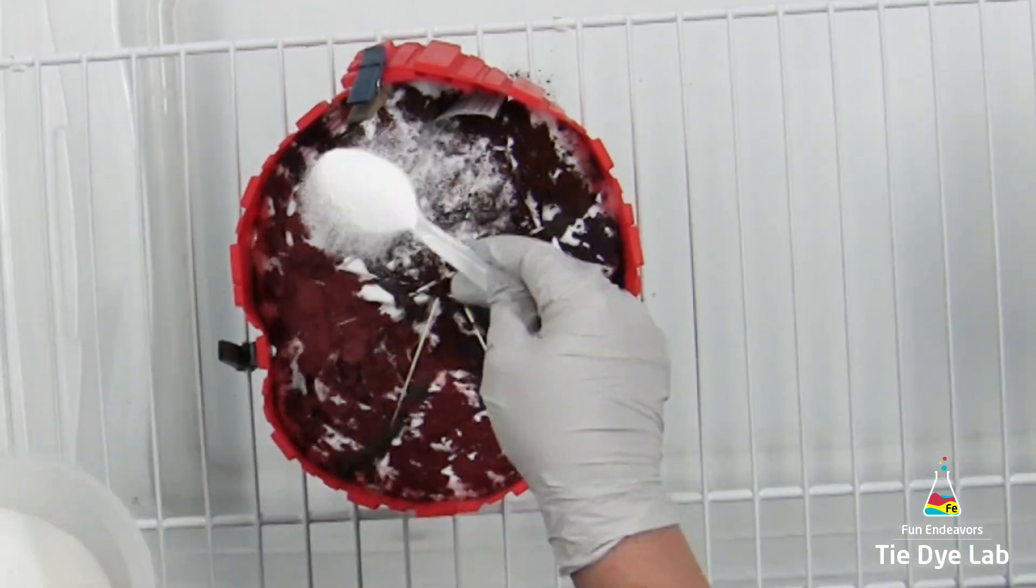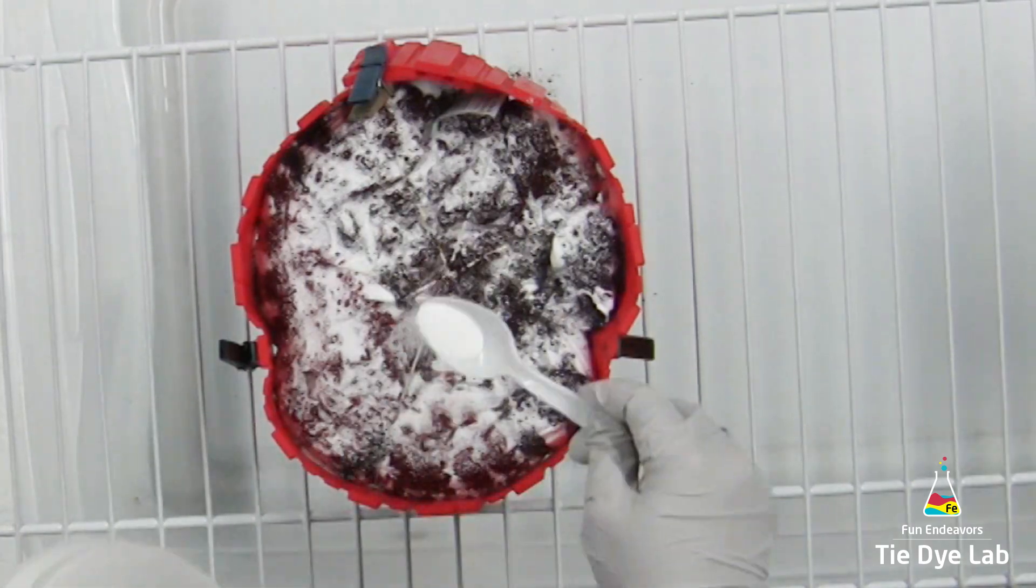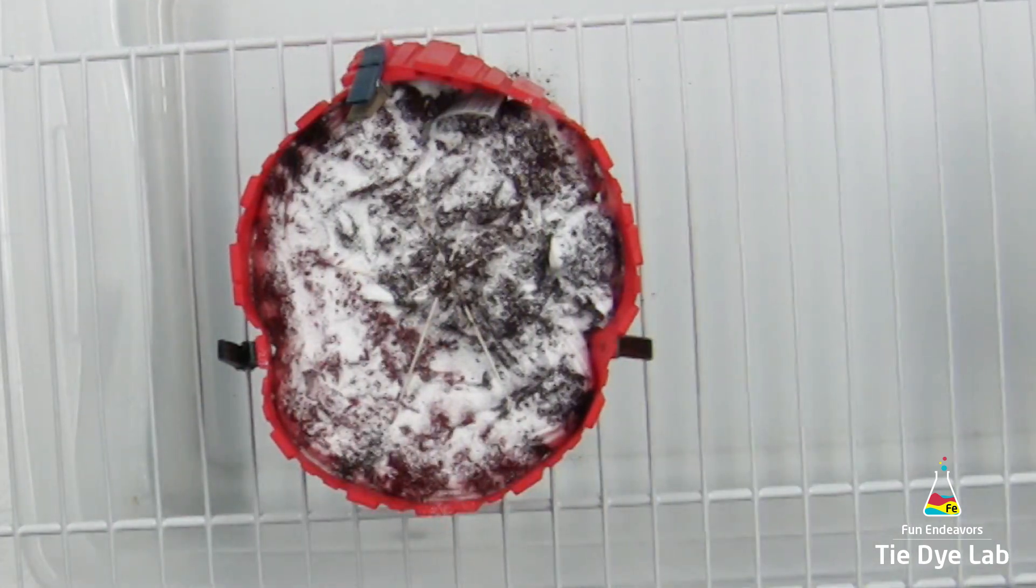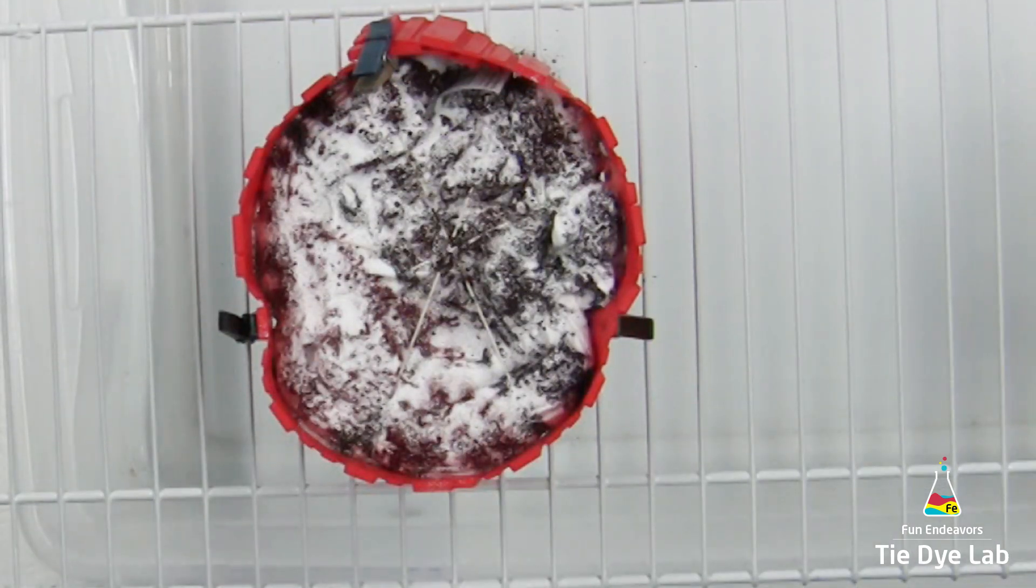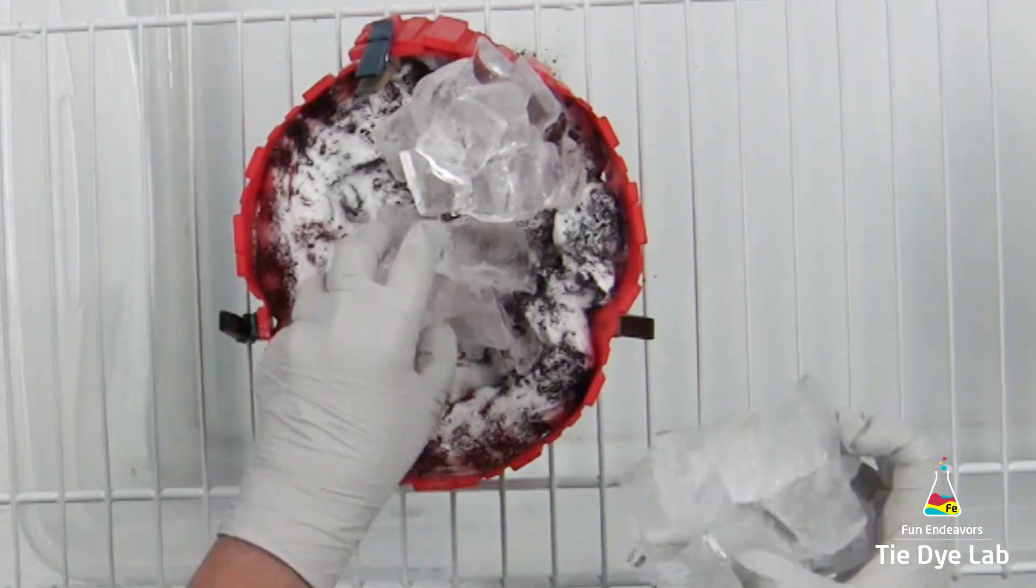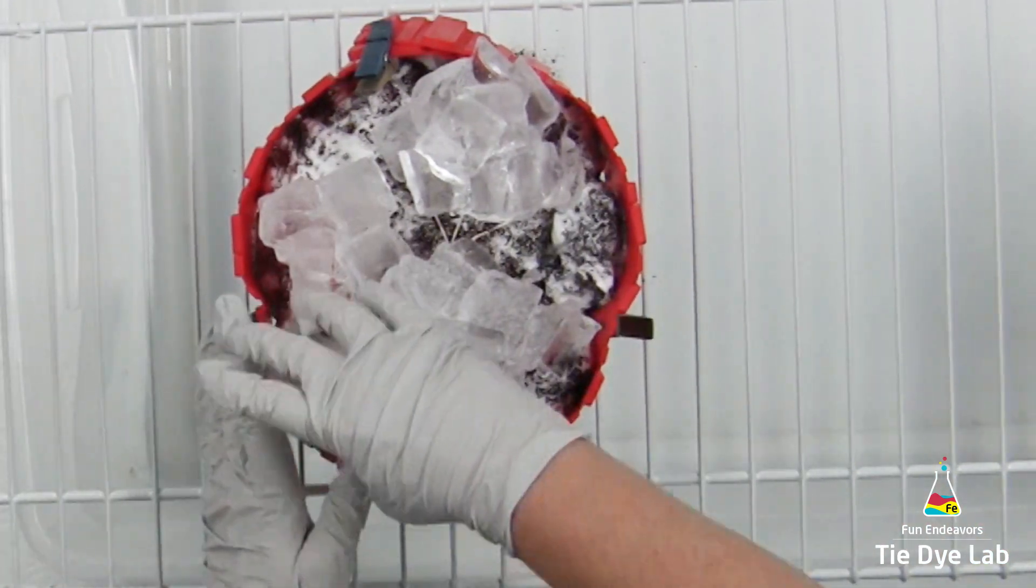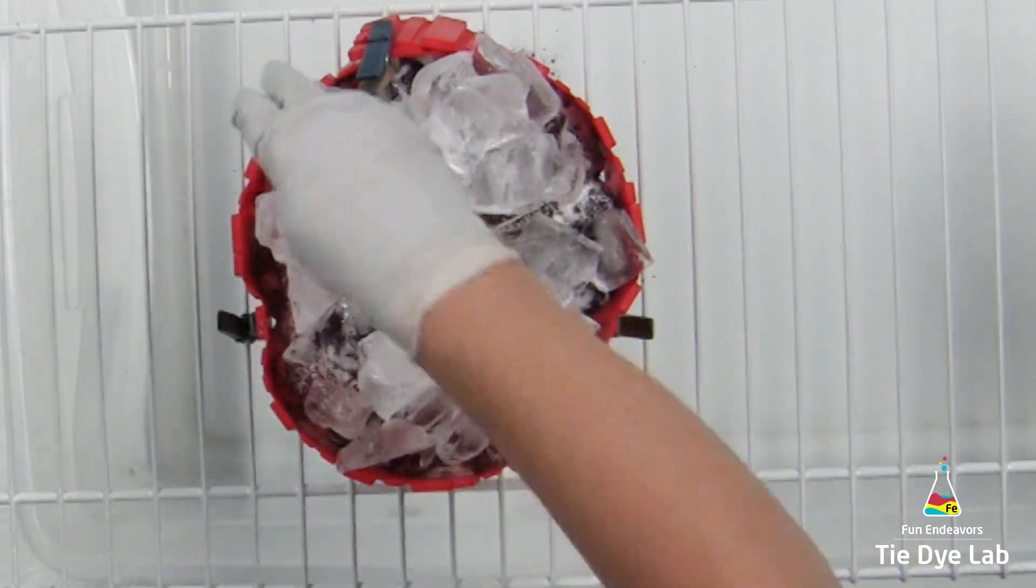Now I'm going to add an additional sprinkle of soda ash to the shirt. I do this to make sure that when the ice melts and runs through the shirt I still have plenty of soda ash remaining in the shirt to react with the dye. Then I'm going to add the ice to the top.